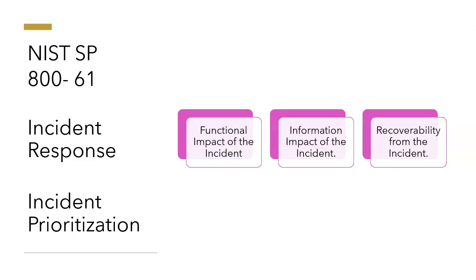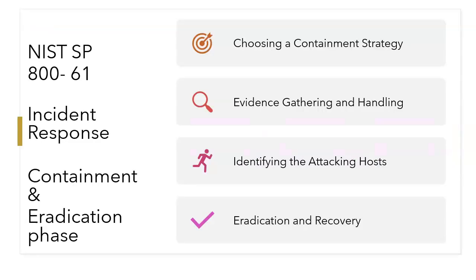After analysis, we need to document the incident. This NIST document provides details on how to document incidents. It also covers incident prioritization, which can be done depending on the functional impact of the incident, the informational impact, and recoverability. Relevant parties must also be notified using appropriate channels. Then comes the containment and eradication phase, which includes choosing a containment strategy, evidence gathering and handling, identifying the attacking host, and eradication and recovery.